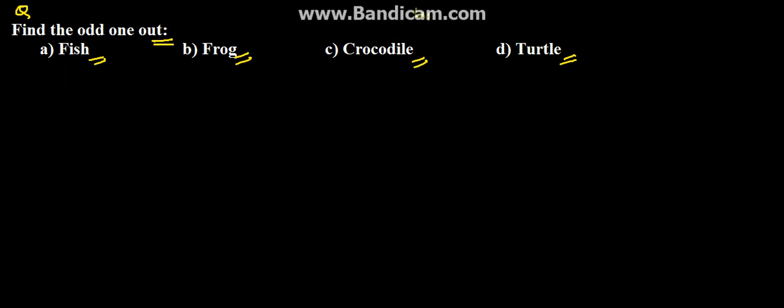So here this is an example of word classification. So here we have been given the names of four animals.